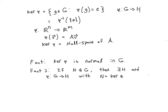An example of a kernel you've actually seen before in linear algebra is the null space of a matrix. Given two vector spaces R^n and R^m and an n-by-m matrix A, there's a linear transformation from R^n to R^m given by matrix multiplication: phi of v equals A times v. The kernel would be those vectors where phi of v equals the zero vector — the identity element in R^m. This is just a generalization of the null space.